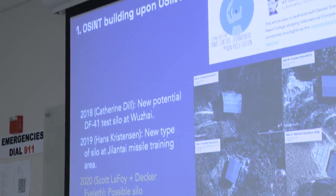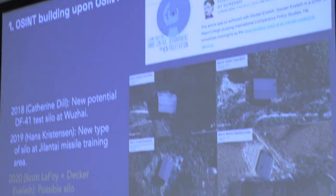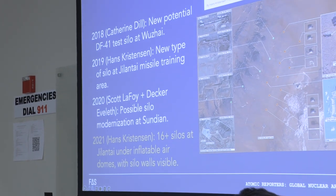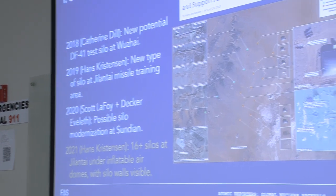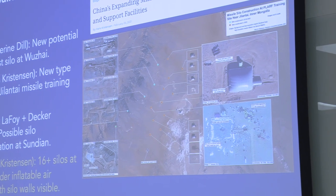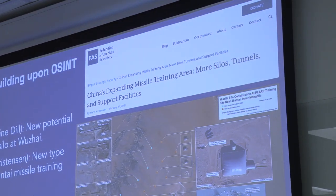The methodology is quite interesting because it gives you a sense of how open-source work builds on work that other researchers are doing in the same field. Between 2018 and 2020, a lot of researchers noted that China was starting to build prototypes for silos in different places around the country. They all looked a little different and it was unclear what was going to happen. Then in 2021, my colleague Tom noted there were roughly 16 silos under construction at a Chinese missile training site.